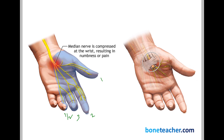Classically, early in the disease, the pain is relieved when she hangs her hand over the side of the bed or flicks her wrist. The patient will tell you she gets pain in the middle of the night, and when she moves or flicks her wrist, the pain comes down. This condition is quite common in females compared to males, with the usual age group around 40 to 50 years.